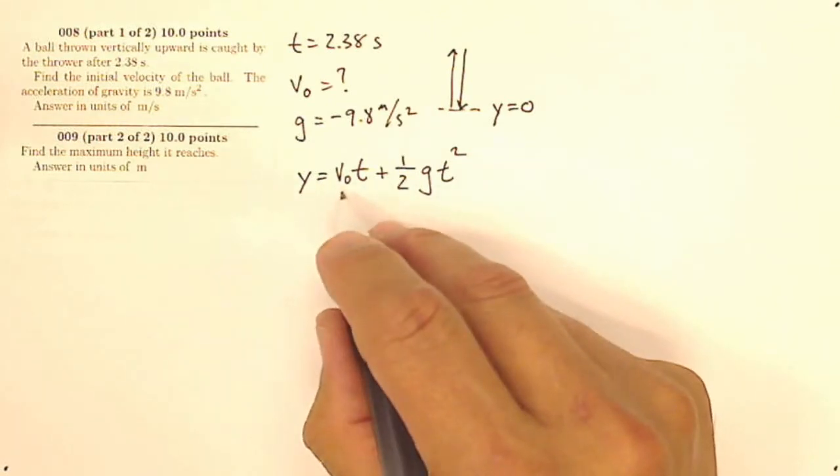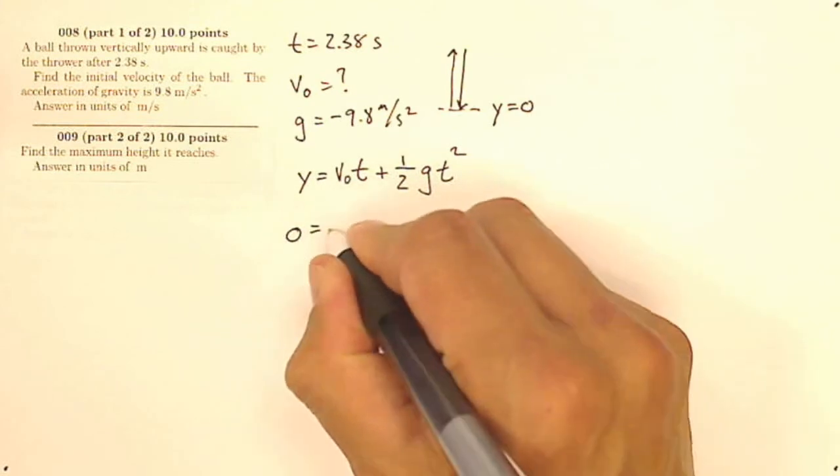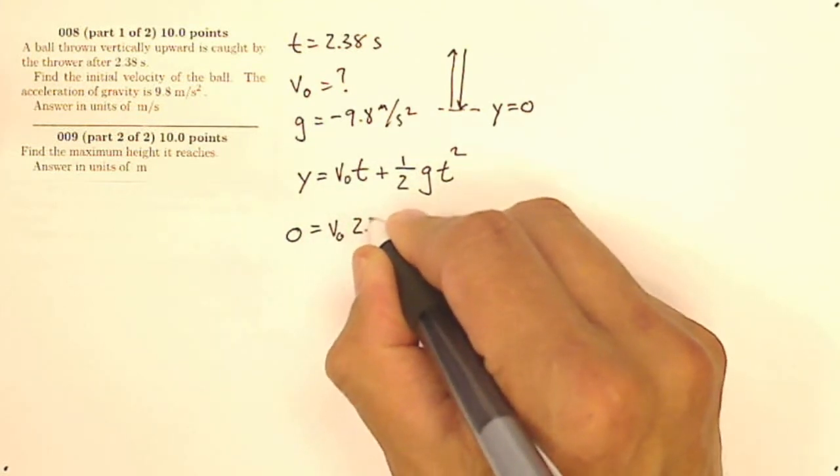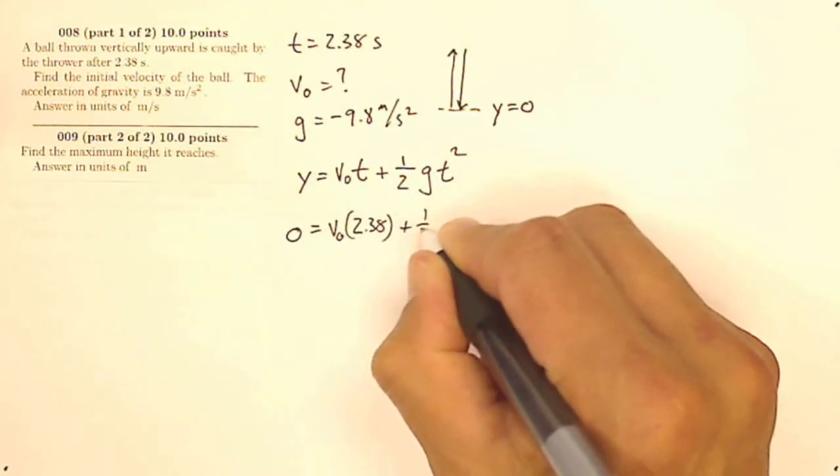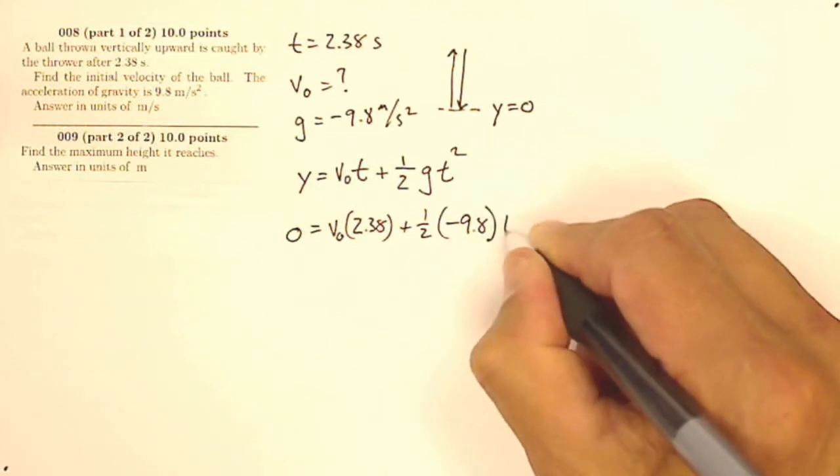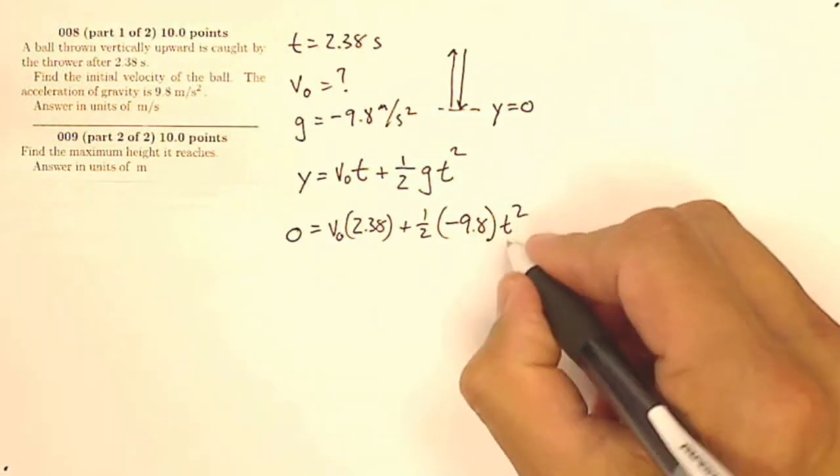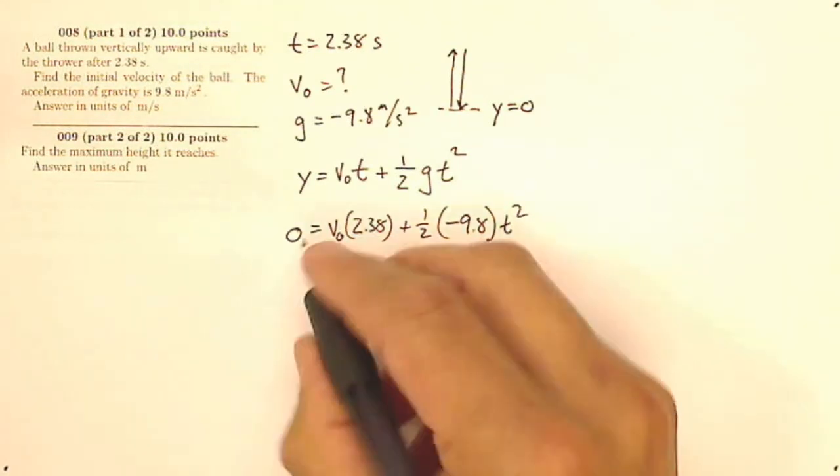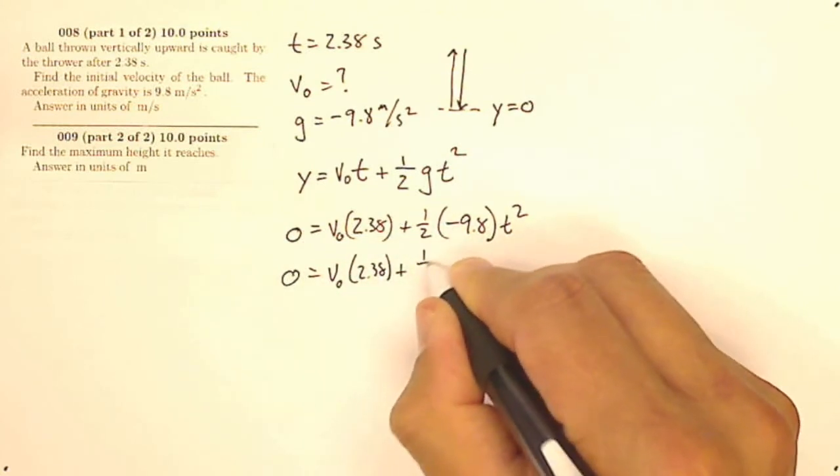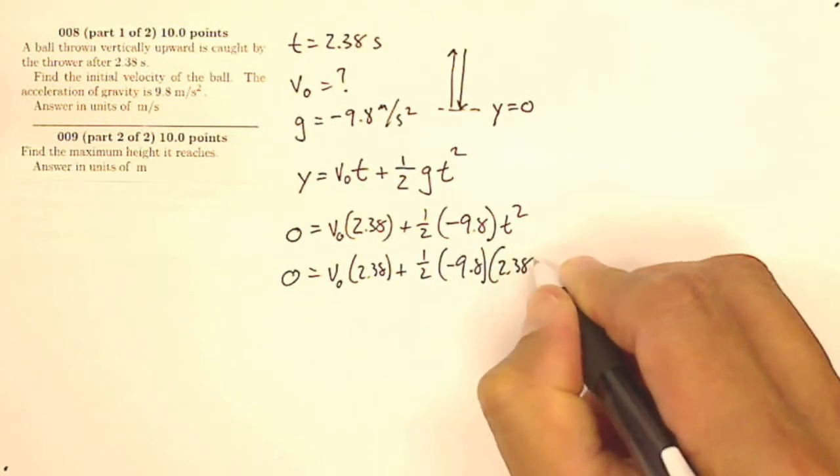So I can solve for v0 here. So my displacement is going to be 0 is my initial velocity, which I'm looking for, times time, which is 2.38 seconds, plus 1 half of my acceleration of negative 9.8 times time squared. Oh, 2.38 squared. There it is. So I've got 0 equals v0 times 2.38 plus 1 half of negative 9.8 times 2.38 squared.